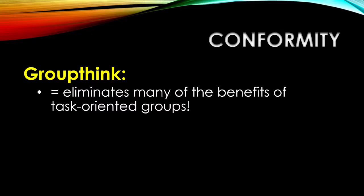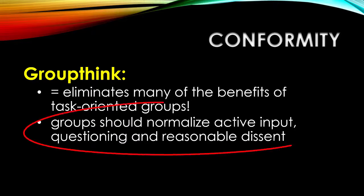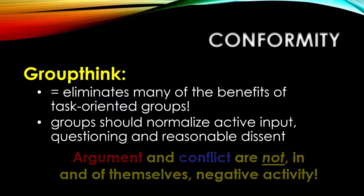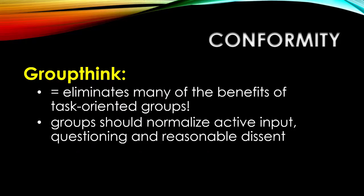In order to avoid groupthink, groups really need to normalize active input, questioning of premises and conclusions, and reasonable dissent. Argument and conflict are not necessarily bad things. This is where a lot of groups — especially student groups and less professionally experienced groups in the workplace — often get it wrong. Just because everybody gets along nicely doesn't necessarily mean the best decisions are being made. You need argument. You need people to question assumptions.